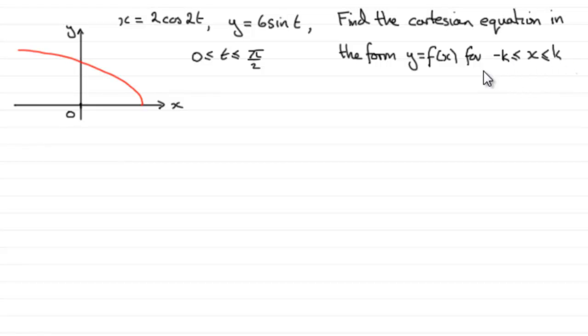So first of all, how do we get this equation in the form y equals f(x)? How do we find the Cartesian equation? Well, we've got to eliminate the parameter t here. And because this is a trigonometric parametric equation, we need to find some trigonometric identity that relates cosine 2t to sine t.